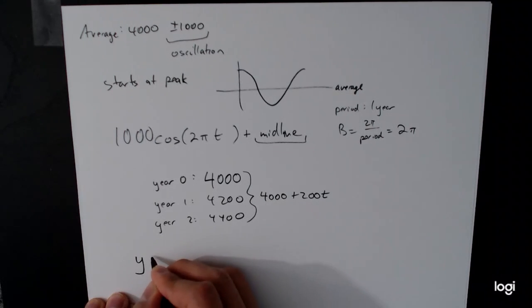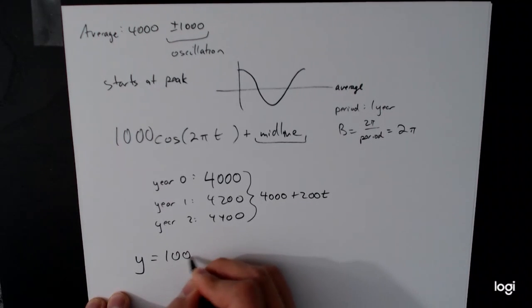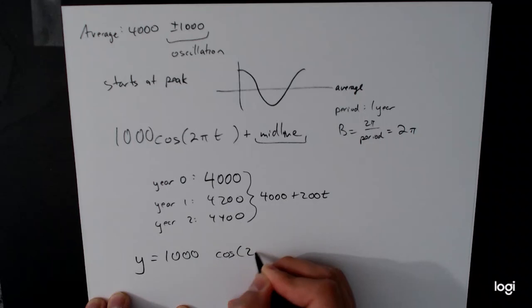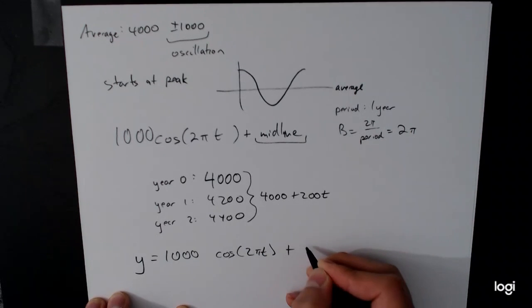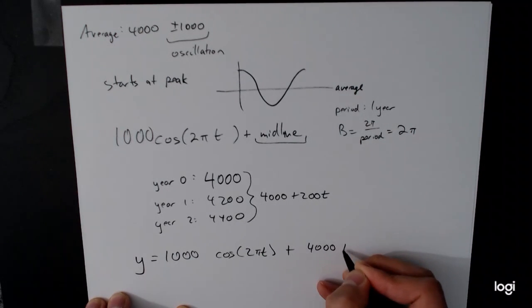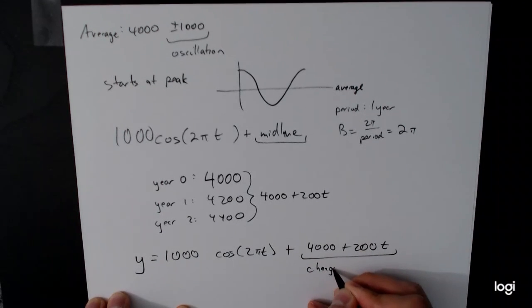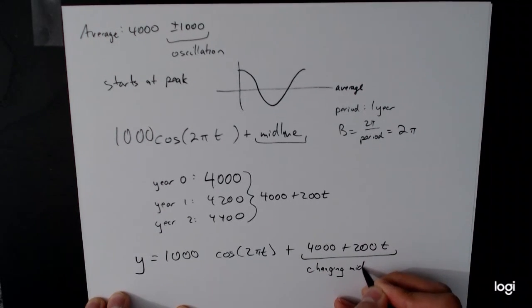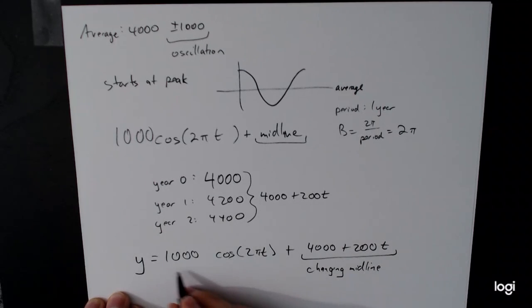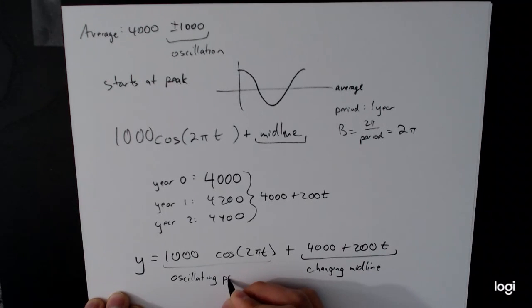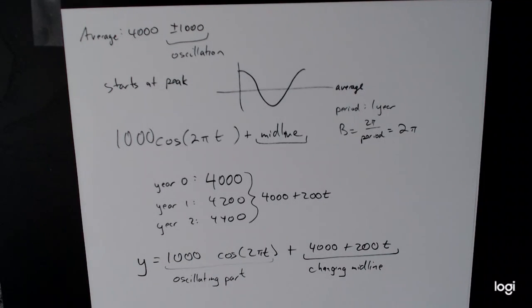So our model will look like this: 1000 cosine 2 pi t plus 4000 plus 200 t. Over here, this is the changing midline part. And over here, this is what we've been talking about before. This is just the oscillating part. That's example three. If you have any questions about this one, let me know.